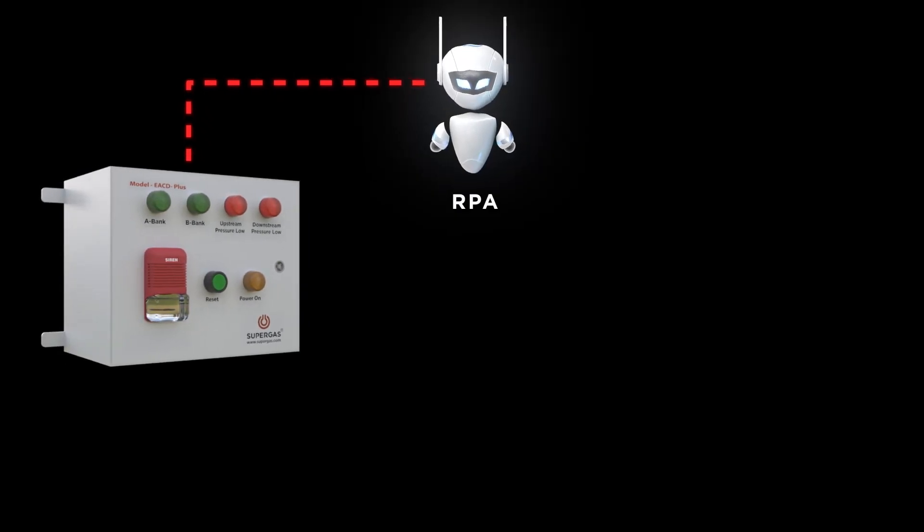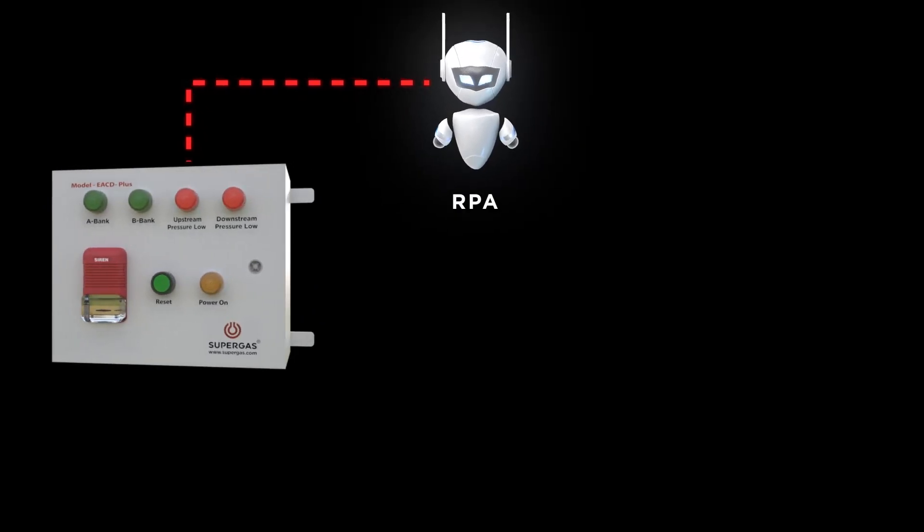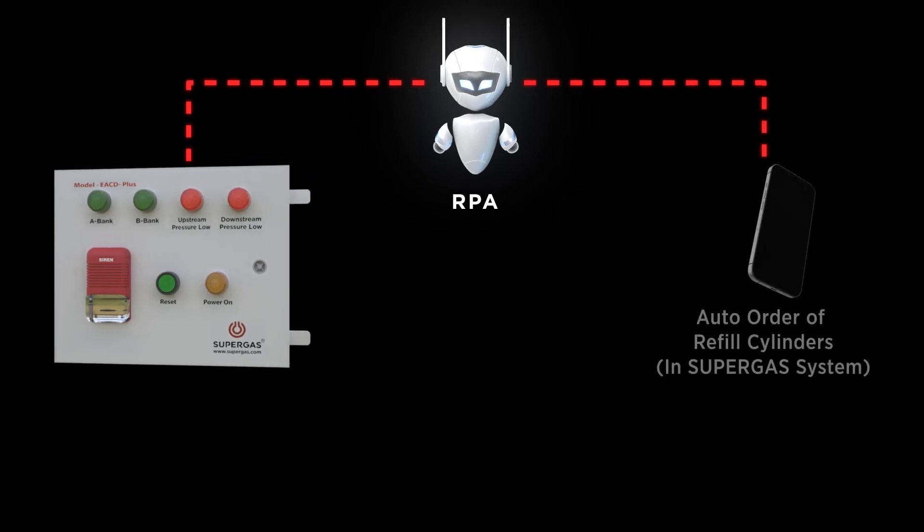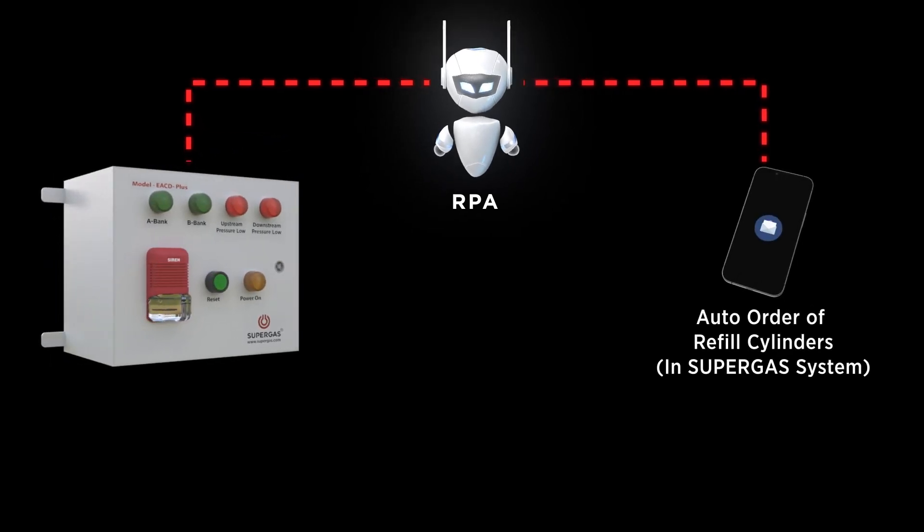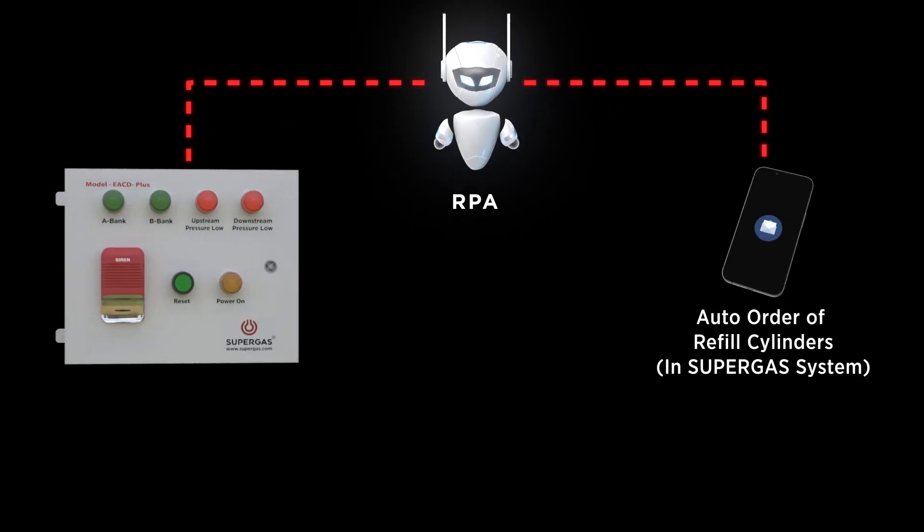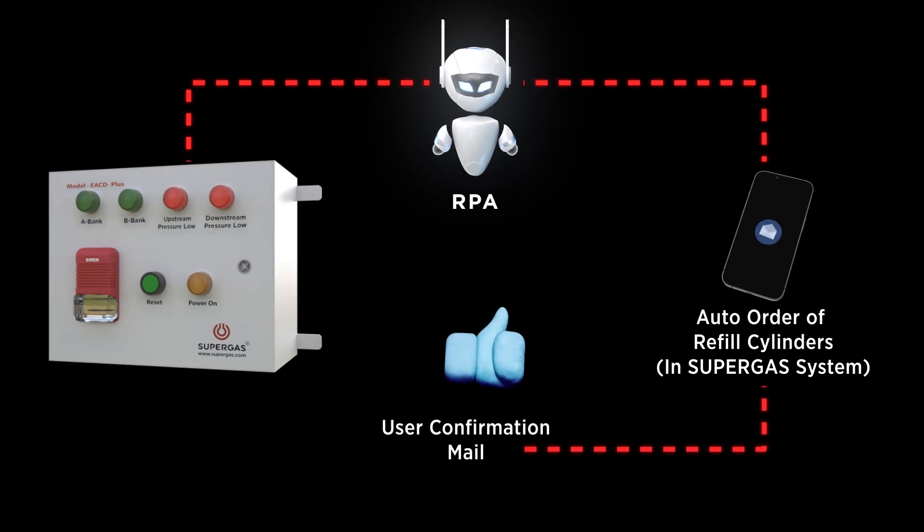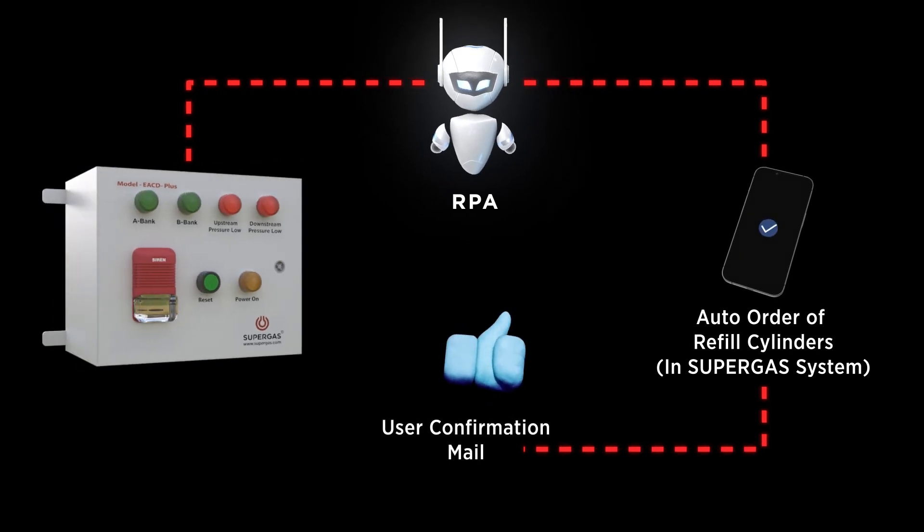This auto-triggered SMS is received by an RPA, Robotic Process Automation Bot, which reads the message and places a refill order. The user gets a confirmation mail upon successful placement of order.